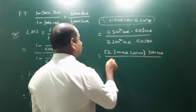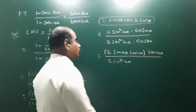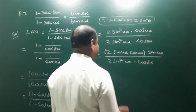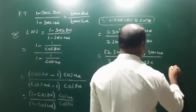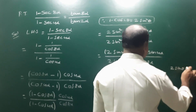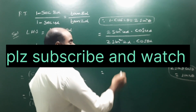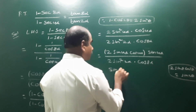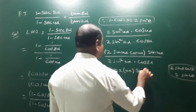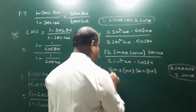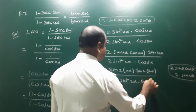The remaining sin4α stays, and 2sin²2α and cos8α stay as is in the denominator. Now applying the double angle formula 2sinθcosθ = sin2θ: 2sin4α · cos4α = sin8α. Also, sin4α = sin(2×2α) = 2sin2α · cos2α. Substituting, the numerator becomes sin8α.